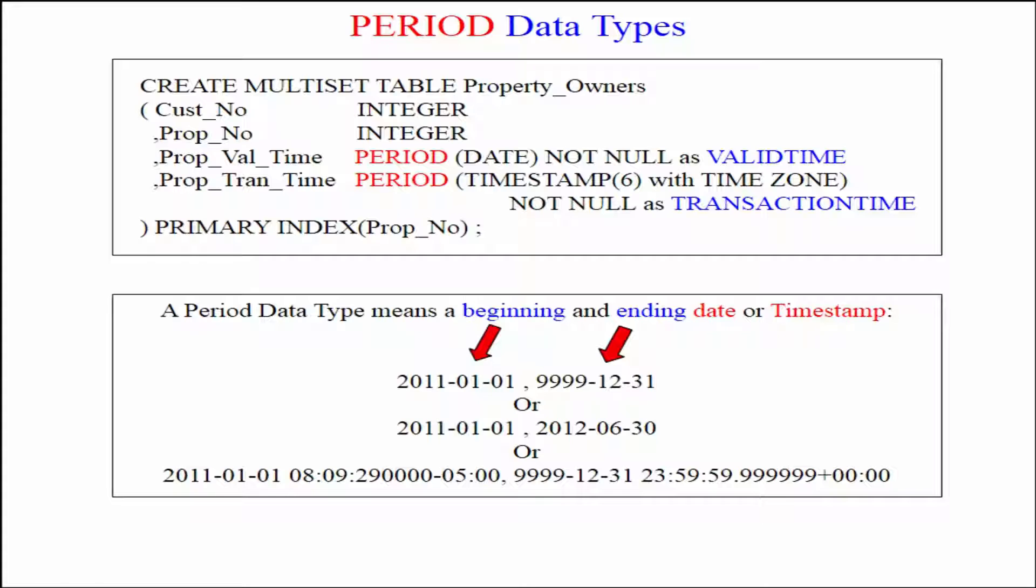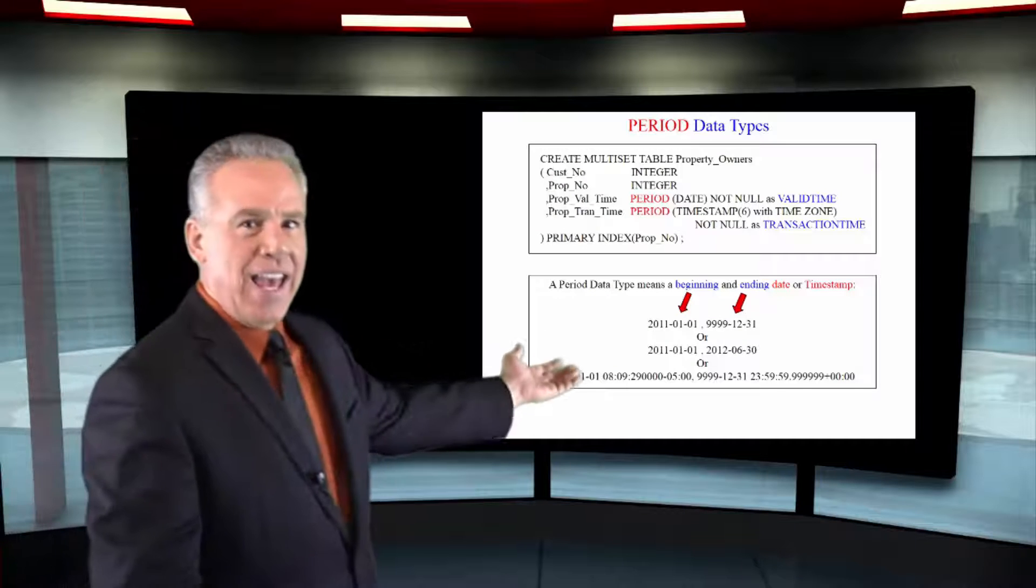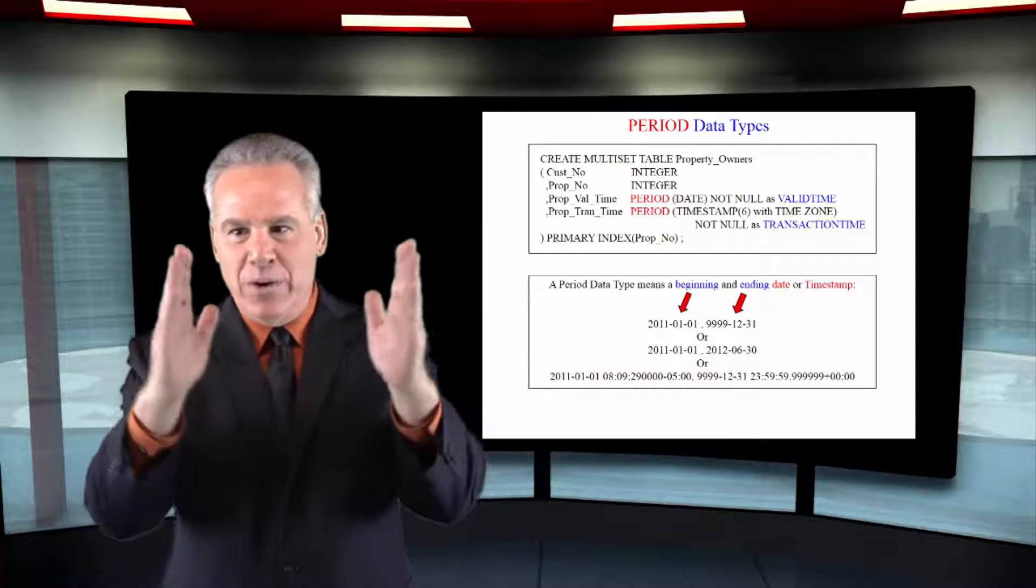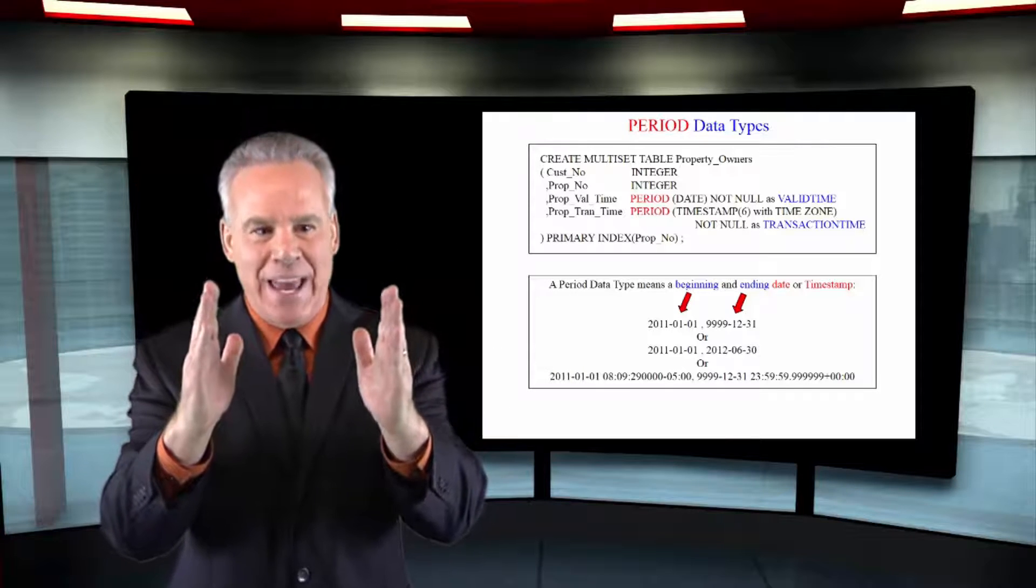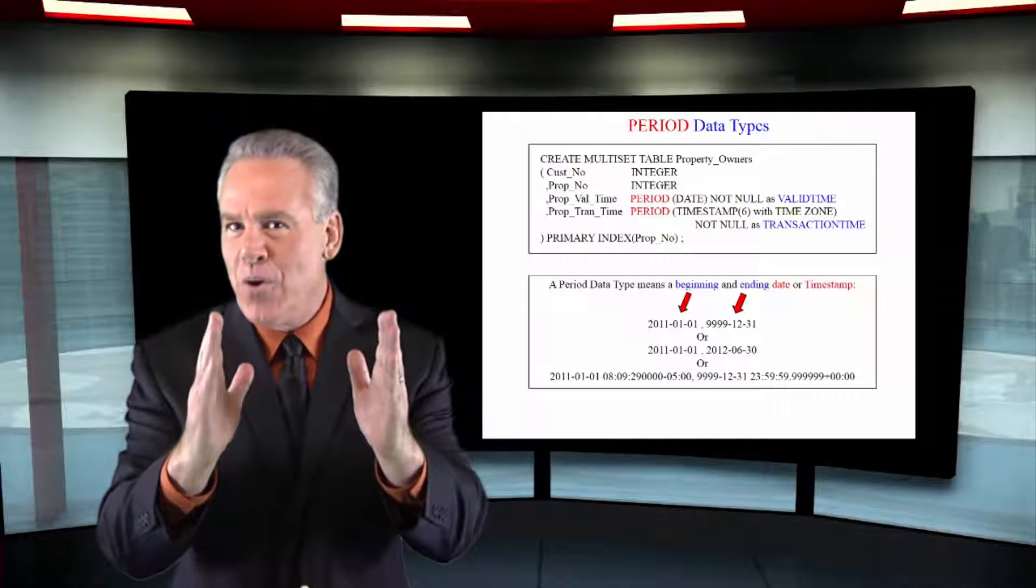That's how they establish if a row is still open. In the next example here, you can see we have a beginning date and we have an ending date. That period of time came and went. So that is a row that's been closed.